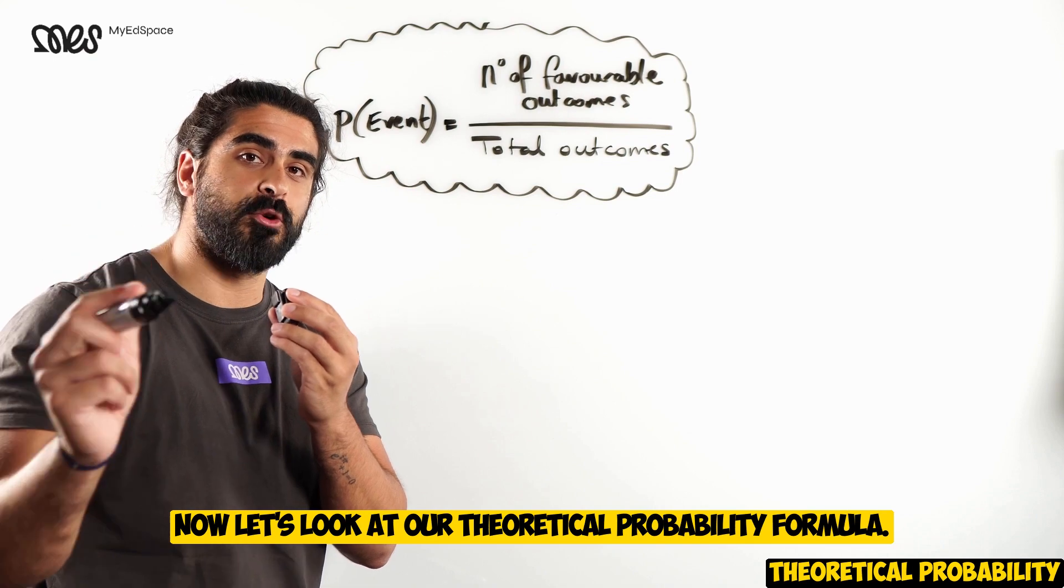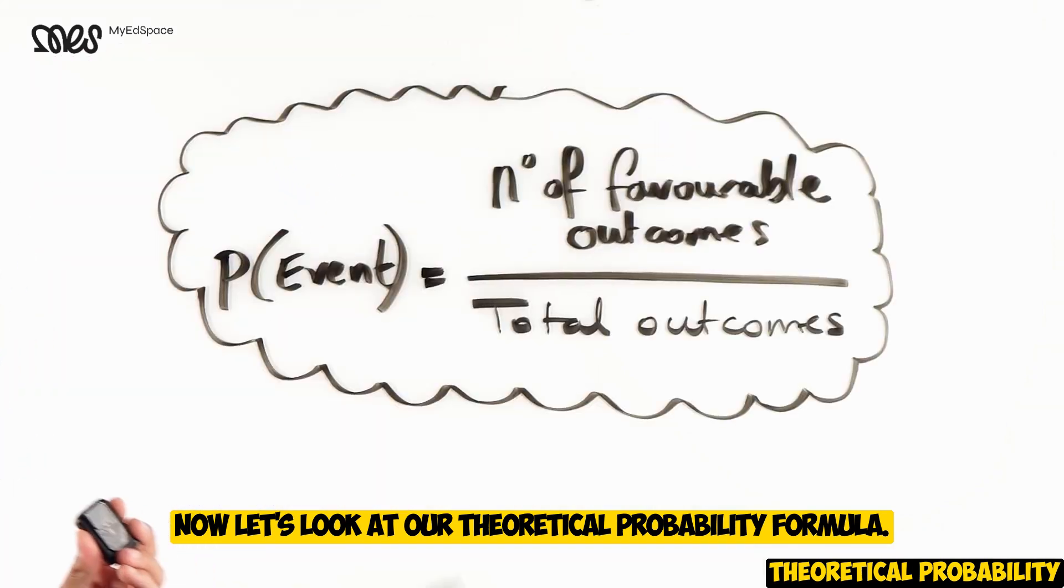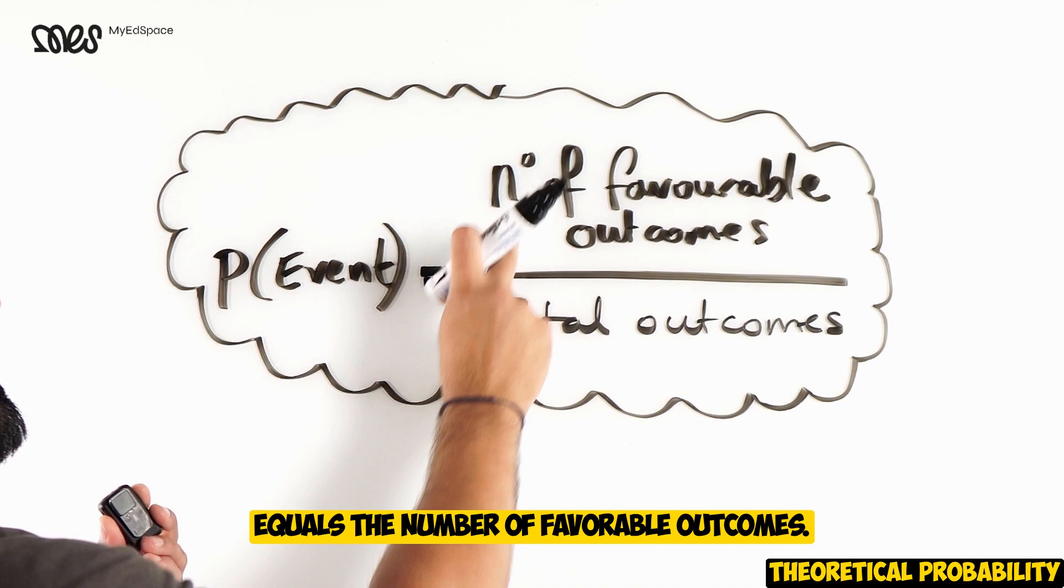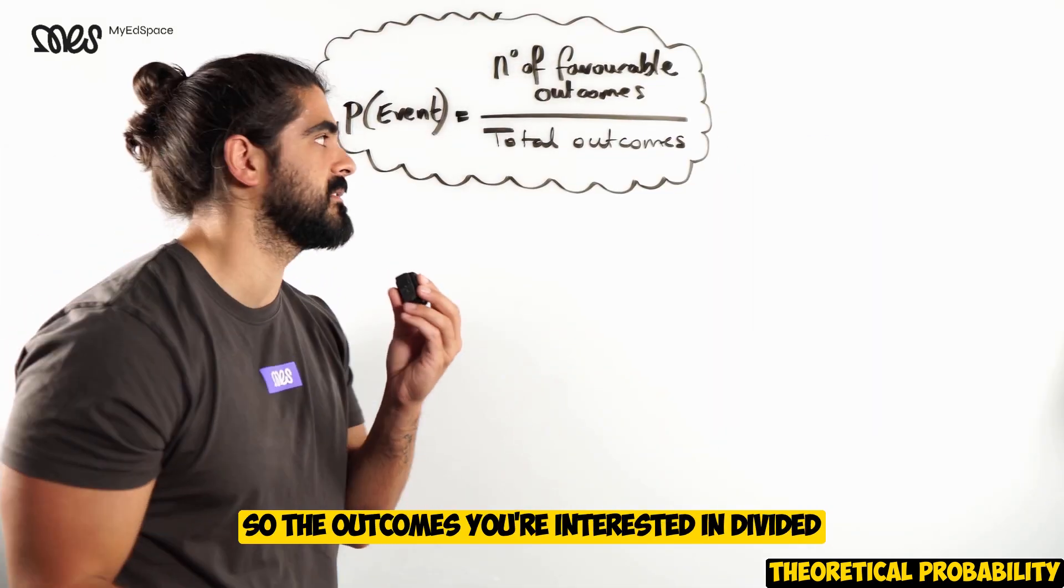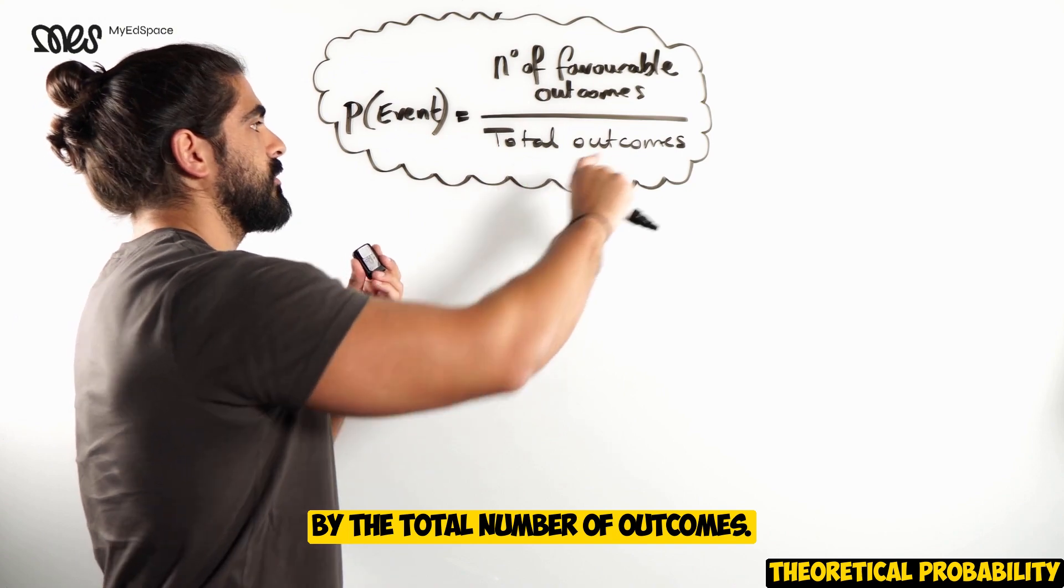Now, let's look at our theoretical probability formula. The probability of any event equals the number of favorable outcomes, so the outcomes you're interested in, divided by the total number of outcomes.